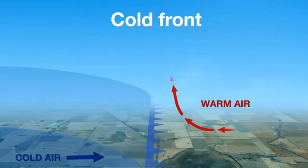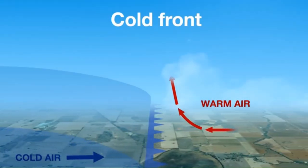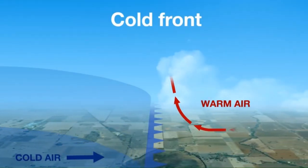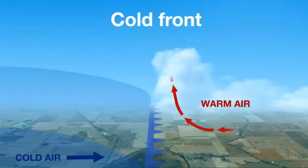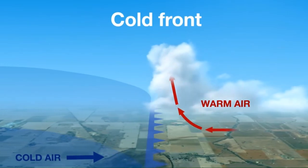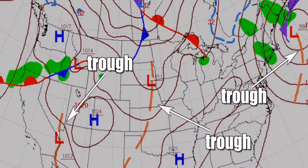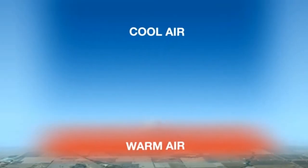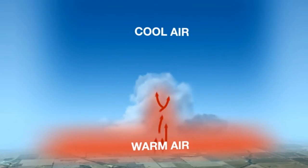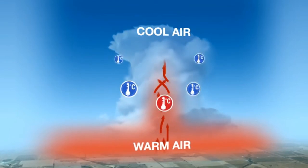Steady-state thunderstorms usually are associated with weather systems. Fronts, converging winds, and troughs aloft force upward motion, spawning these storms, which often form into squall lines. Afternoon heating intensifies them.